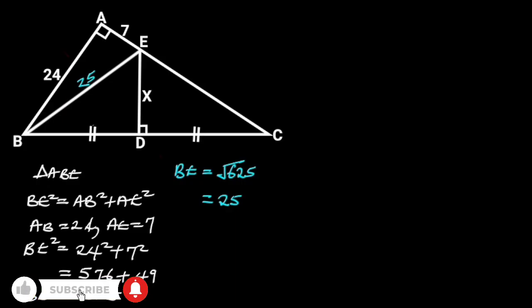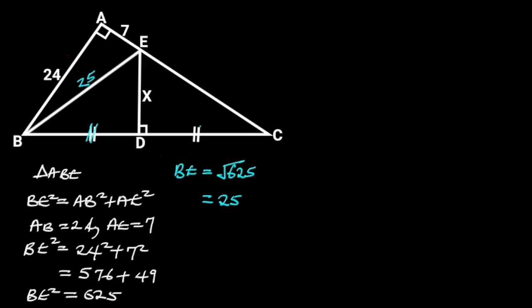Next, let's focus on triangle BCE. Triangle BCE is made up of two triangles: triangle BDE and triangle CDE. From these two triangles, we are given that line BD is equal to line CD, and the two triangles have the common side DE, which is perpendicular to their base. This shows that the two triangles are congruent by side-angle-side. Since these two triangles are congruent, it follows that their hypotenuse is equal. So the hypotenuse of triangle CDE is 25.